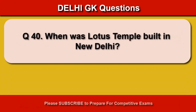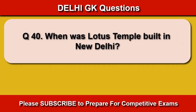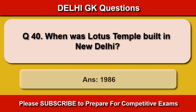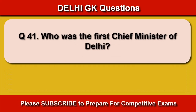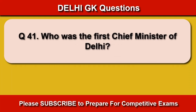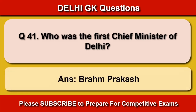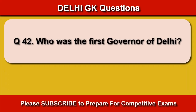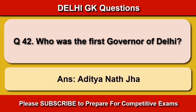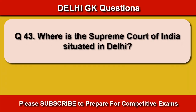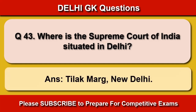When was Lotus Temple built in New Delhi? 1986. Who was the first Chief Minister of Delhi? Prem Prakash. Who was the first Governor of Delhi? Avithyanath Jha. Where is the Supreme Court of India situated in Delhi? Tilak Marg, New Delhi.